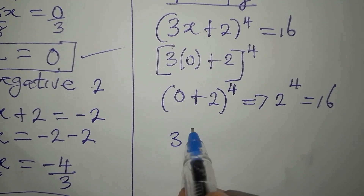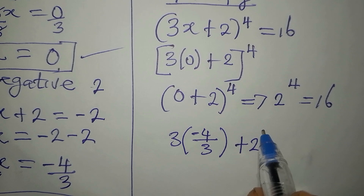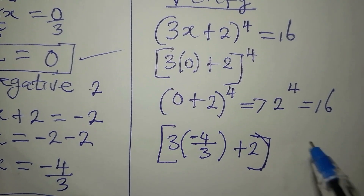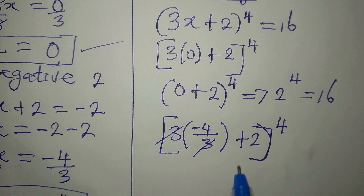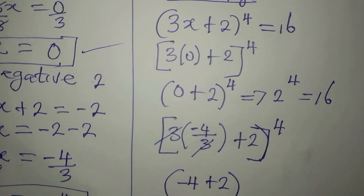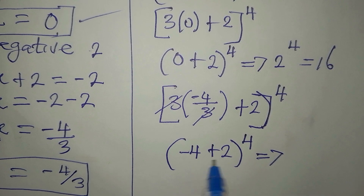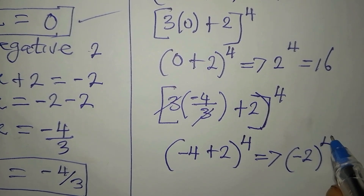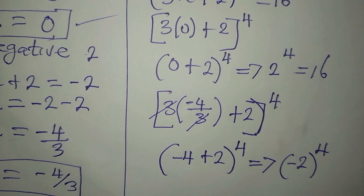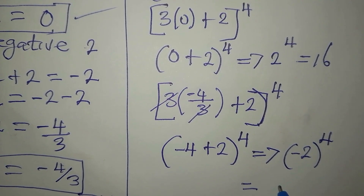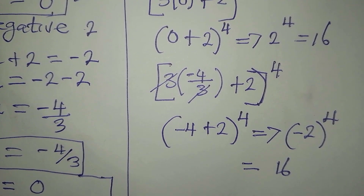For the second solution, x = negative 4 over 3: substituting gives (3 times negative 4/3 + 2)^4. The 3 and 3 cancel, giving (negative 4 + 2)^4 = (negative 2)^4 = 16. Raising a negative number to an even power gives a positive result, so this also equals 16, confirming the solution. Thank you for watching.